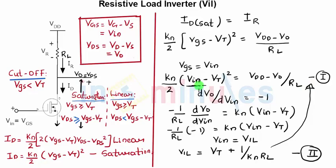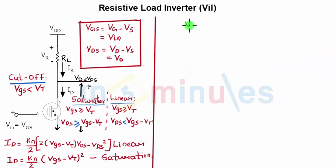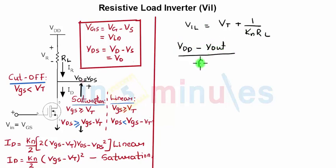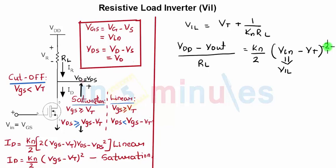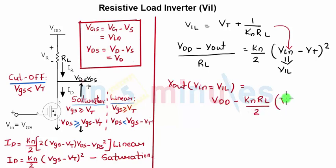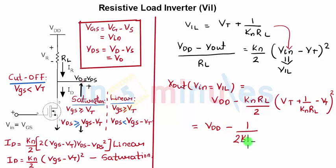That gives us VIL = VT + 1/(KN · RL). Now we substitute this value of VIL back into the current equation: (VDD − Vout)/RL = KN/2 · (VIL − VT)². Substituting VIL, the corresponding output voltage when input equals VIL is: Vout = VDD − (KN · RL / 2) · (1/(KN · RL))², which simplifies to Vout = VDD − 1/(2 · KN · RL).